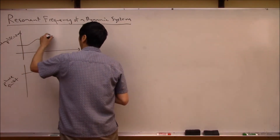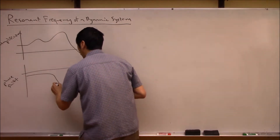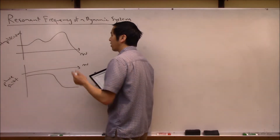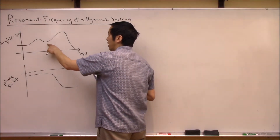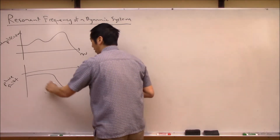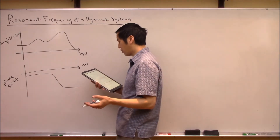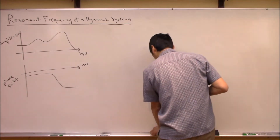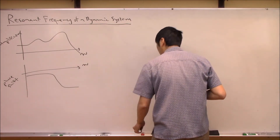So we saw that a Bode plot represents how much the system amplifies or attenuates the input signal as a function of input frequency, as well as how much phase shift was introduced to that system. One of the first natural questions when you see a plot like this is: at what frequency do we obtain the largest output amplification?